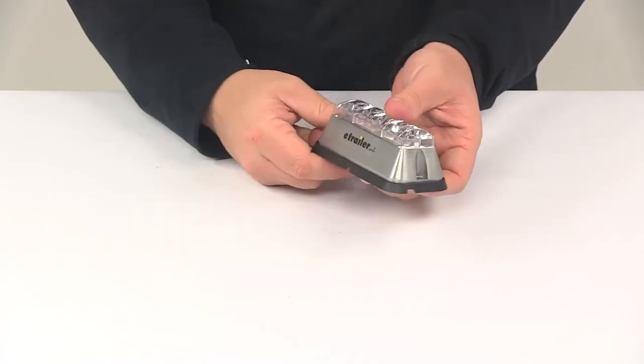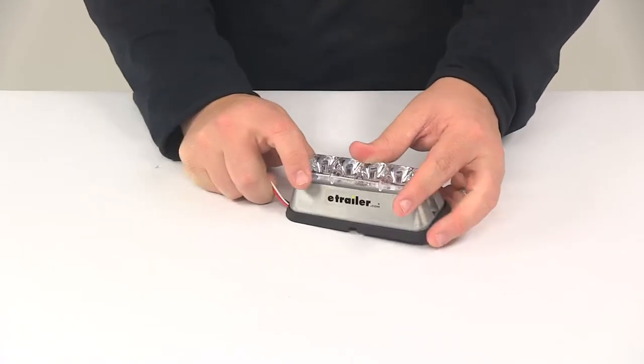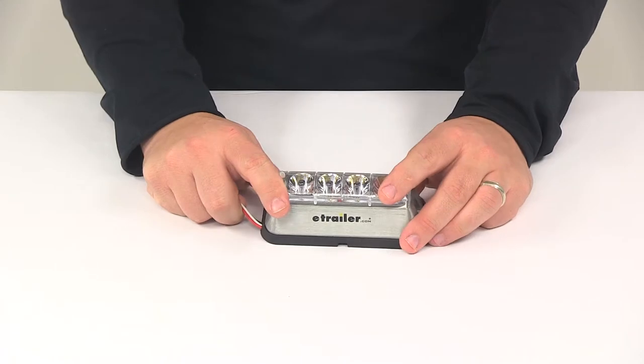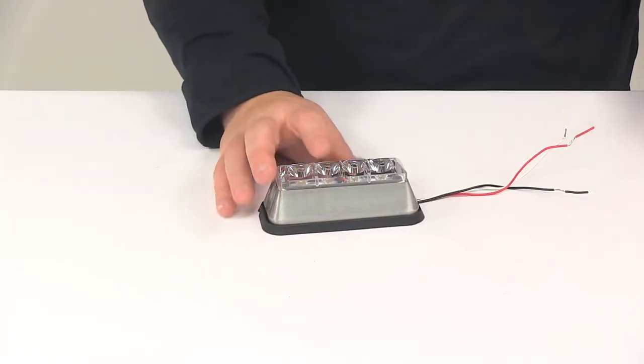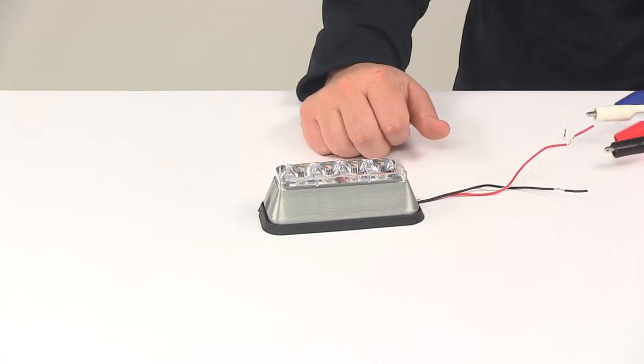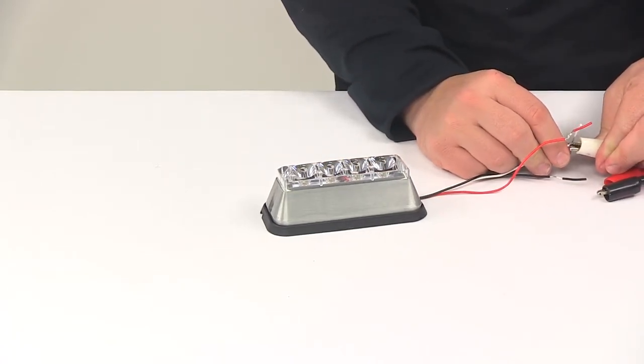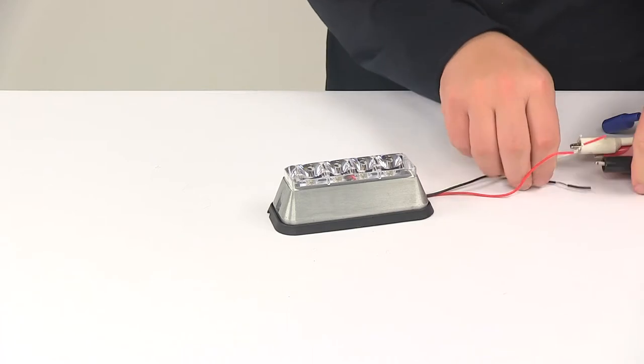This is designed for ten volt to thirty volt systems, and the power draw is zero point five amps. We're going to go ahead and hook it up to power. That way you can see what it looks like with some power running to it, and we'll also be able to turn off our overhead lights so you can see it in a lower light setting.